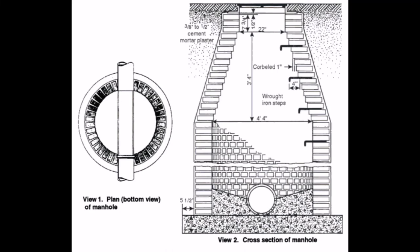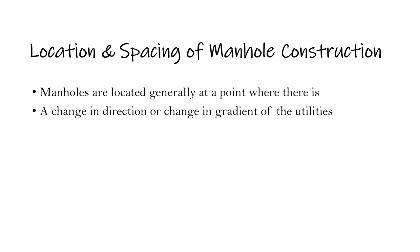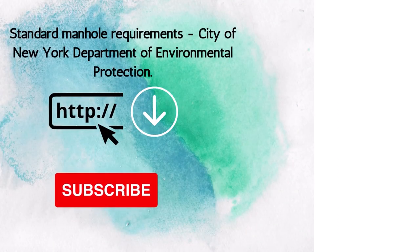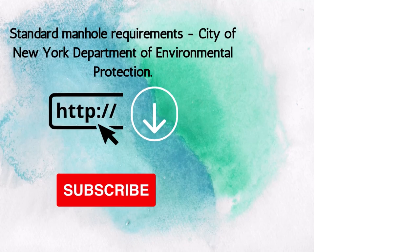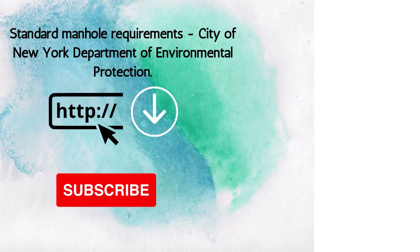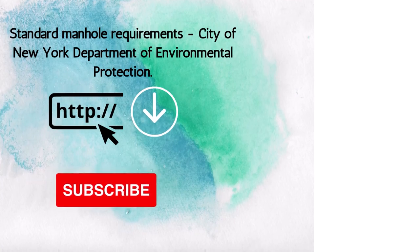Manholes are generally located at points where there is a change in direction or gradient of the utilities, or in areas where access is needed for specific maintenance purposes. You can check the link in the description below to learn about the location and spacing of manholes constructed as per the New York Department of Environmental Protection.